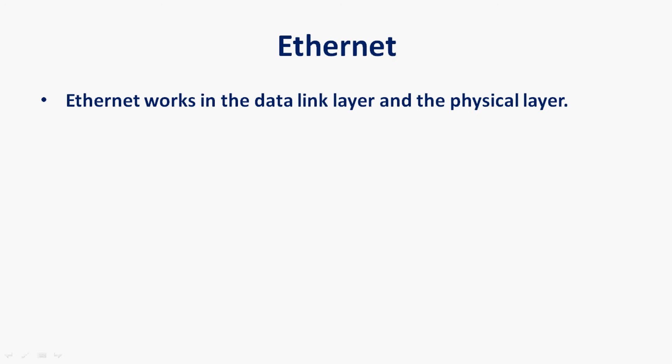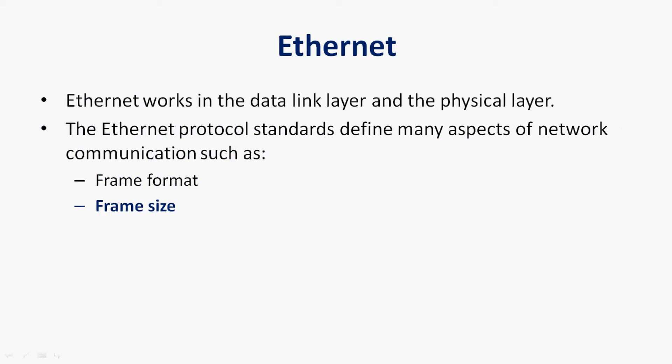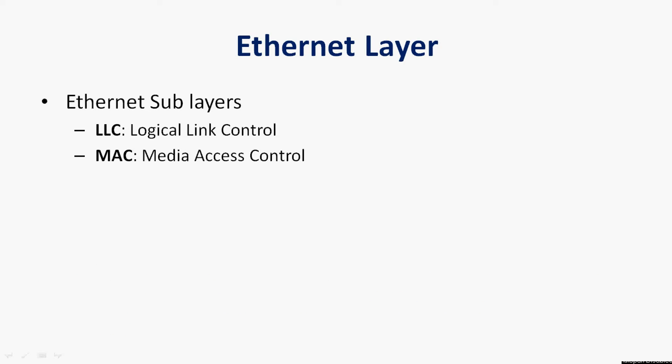Coming back to Ethernet — Ethernet works in the data link layer and the physical layer. The Ethernet protocol standards define many aspects of network communication such as frame format, frame size, timing, and encoding. The host formats the messages into the frame layout specified by the standards when messages are sent between hosts on an Ethernet network.